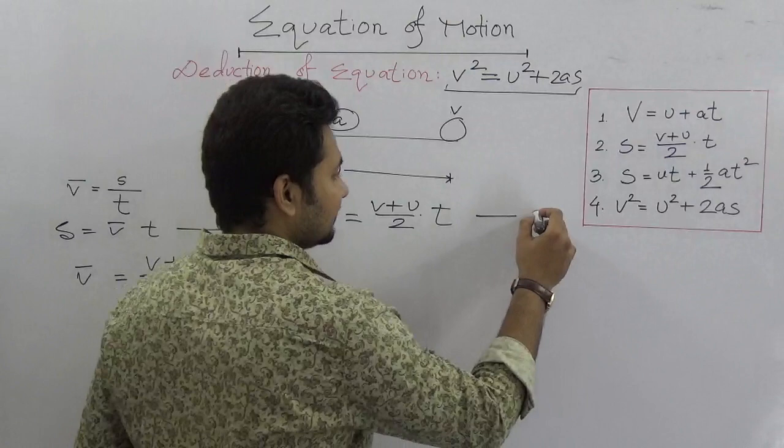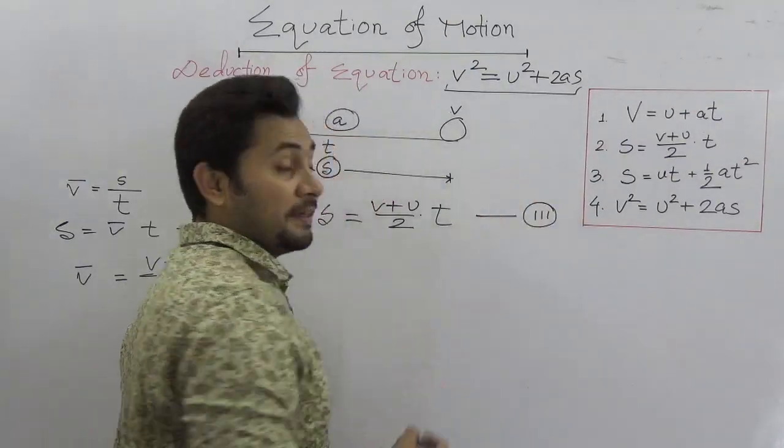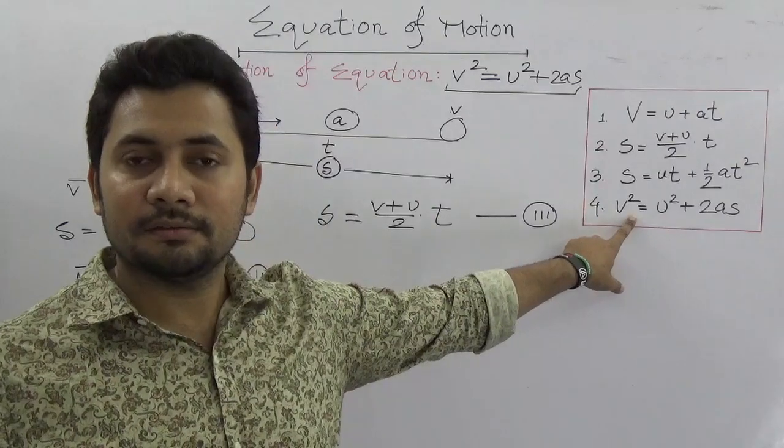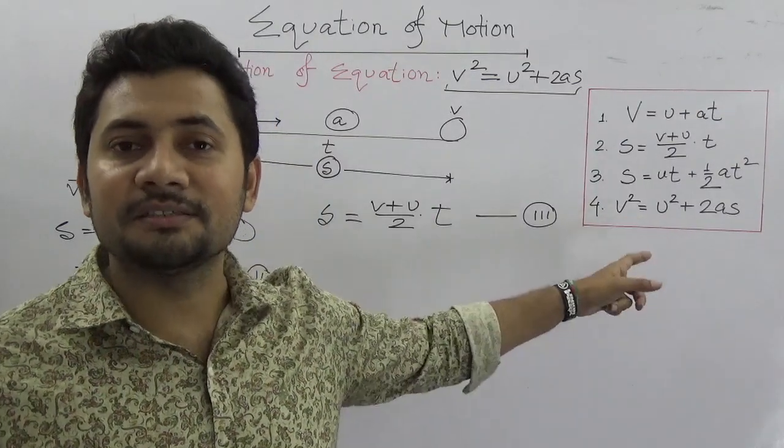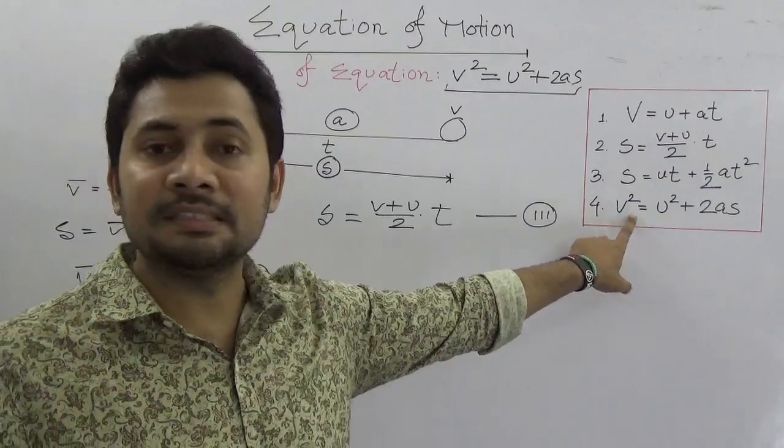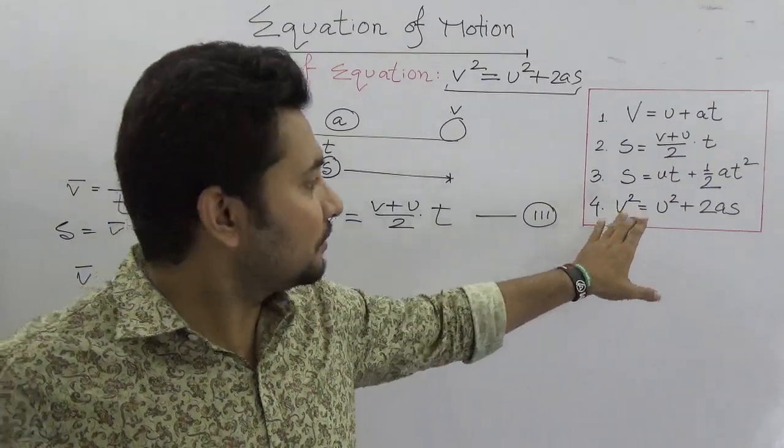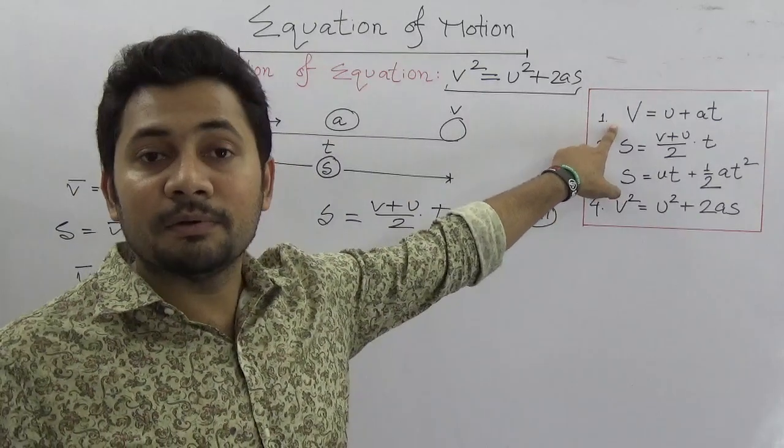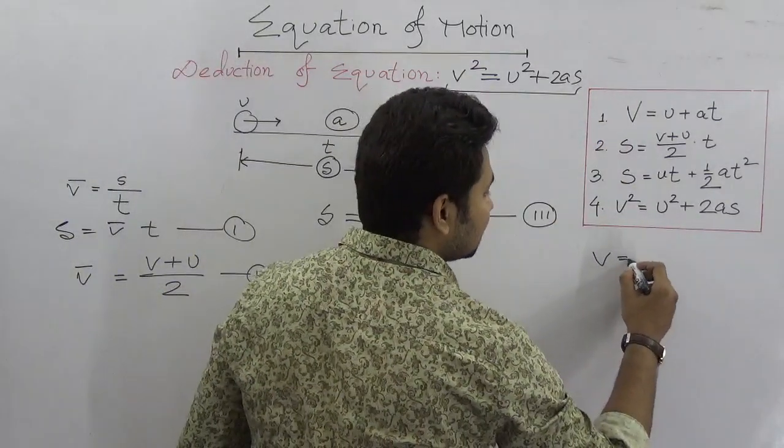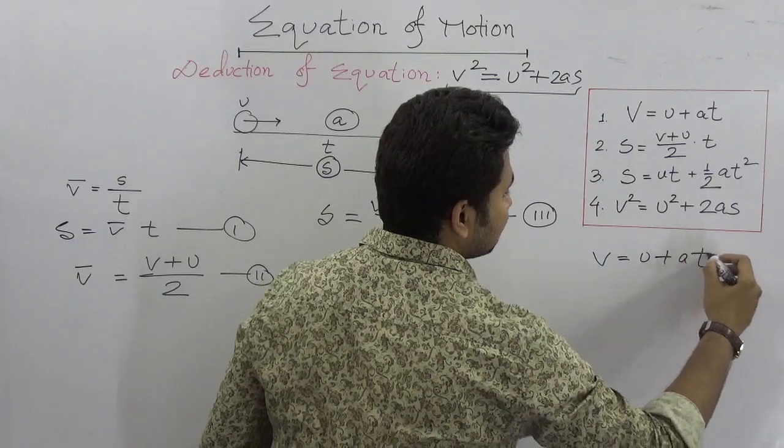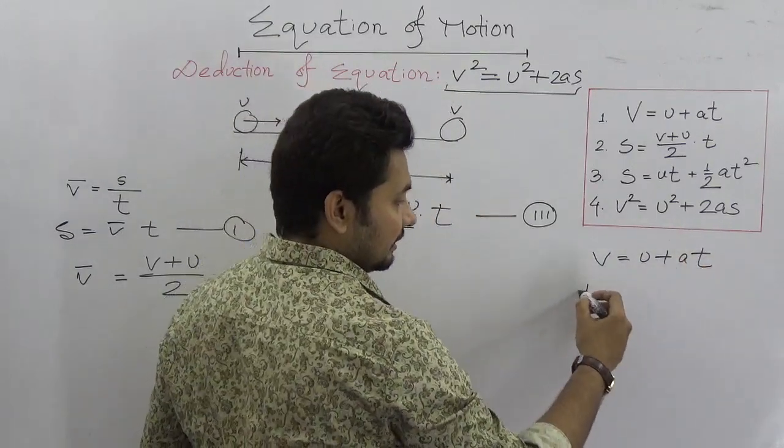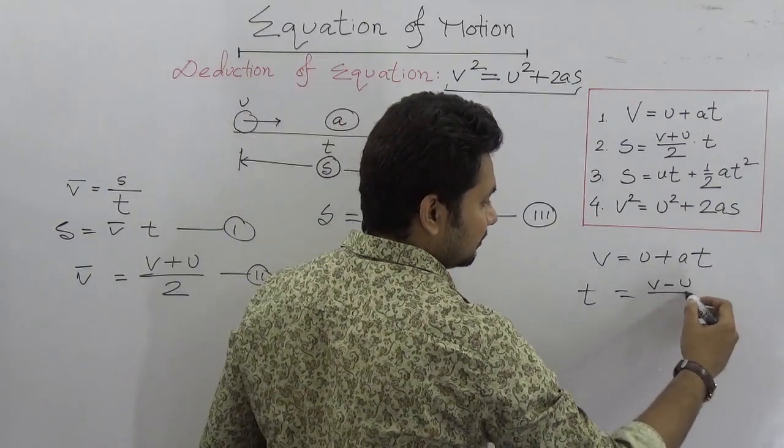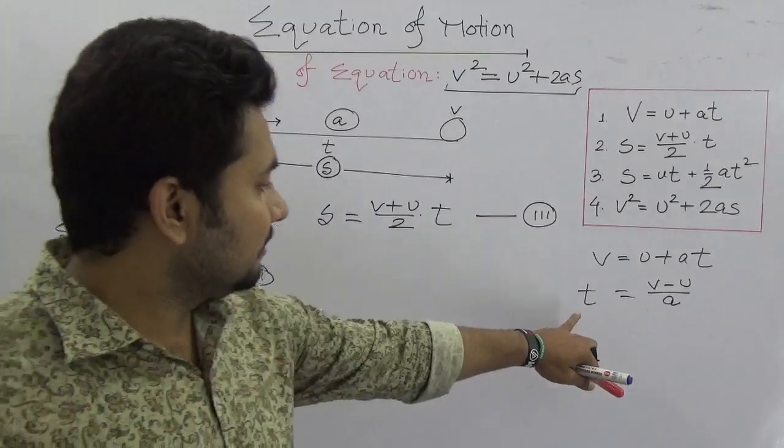The most interesting thing is: what is absent in the equation v² = u² + 2as? We can see there is no time, so time is absent here. From equation number one, we know that v = u + at. If we solve for t, we will find t = (v - u)/a.